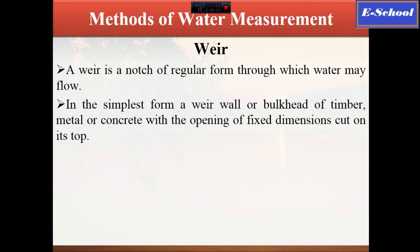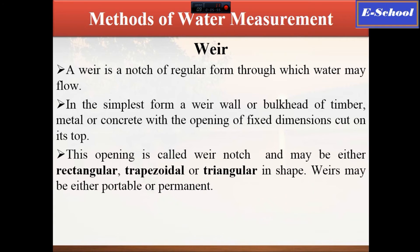Another measuring device is the weir. It is a notch of a regular form through which water may flow. In its simplest form, the weir consists of a wall or bulkhead of timber, metal, or concrete with an opening of a fixed dimension cut on its top. This opening is called a weir notch and may be either rectangular, trapezoidal, or triangular in shape.